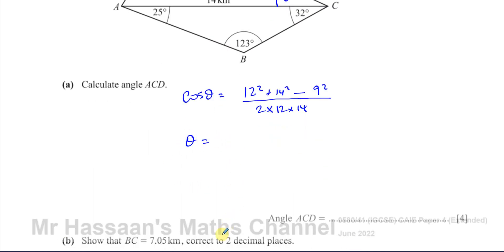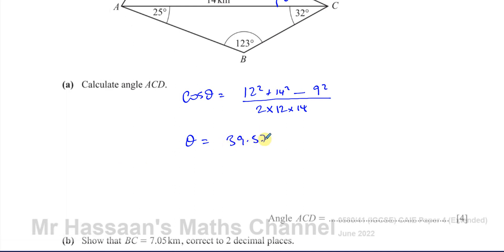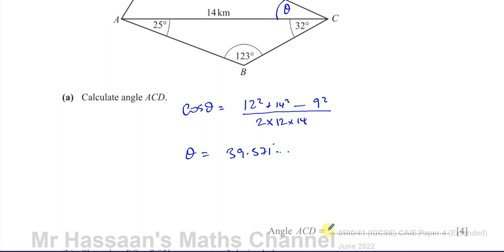Putting this into the calculator — making sure we're in degree mode — we use inverse cosine of the fraction: (12² + 14² − 9²) / (2 × 12 × 14). That gives us 39.571 continuing. Since the paper doesn't specify, angles should be given to one decimal place as stated in the paper instructions. So the answer is 39.6 degrees to one decimal place.